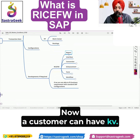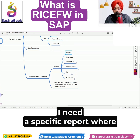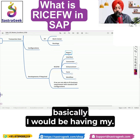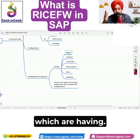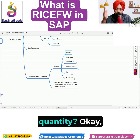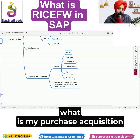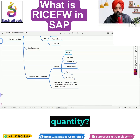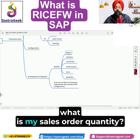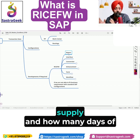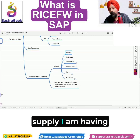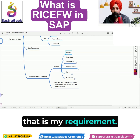Now a customer can have a requirement like: I need a specific report where all my materials are listed. For each material, what is my purchase order quantity, what is my purchase requisition quantity, what is my delivery quantity, what is my sales order quantity, and what is the demand versus supply, and how many days of supply I am having? That is my requirement.